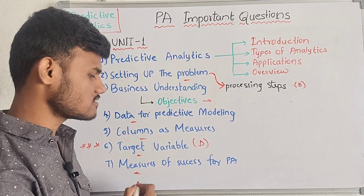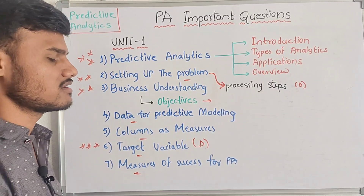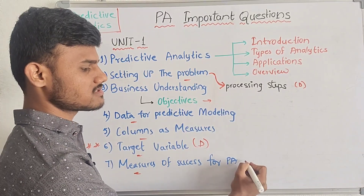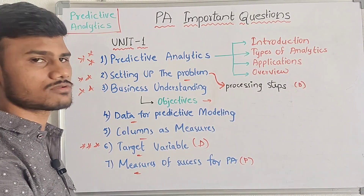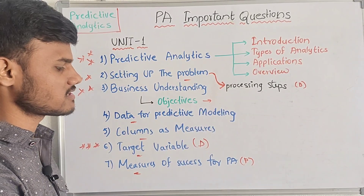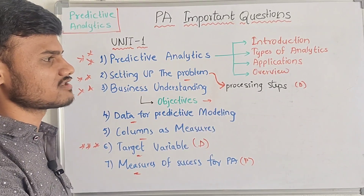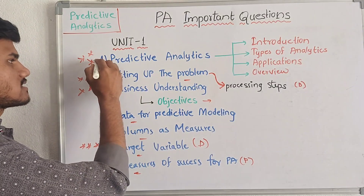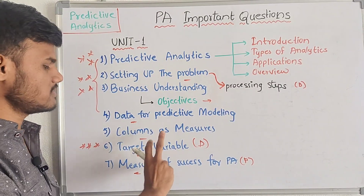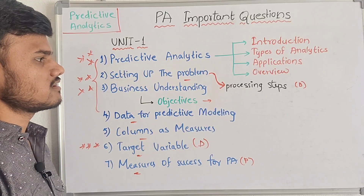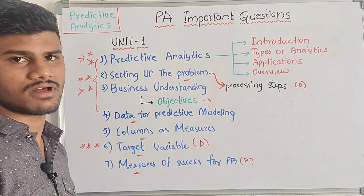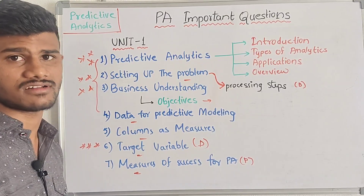Next is the measure of success for Predictive Analytics. Explain it point-wise. The first four questions are perfect — you can easily score 10 marks. First four questions are easy. This is completely our first unit.